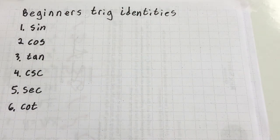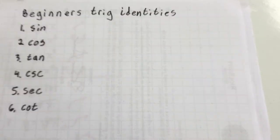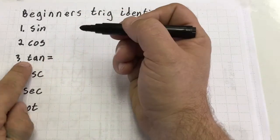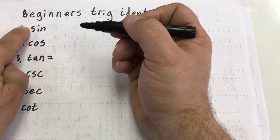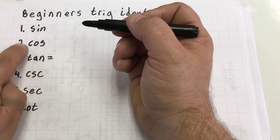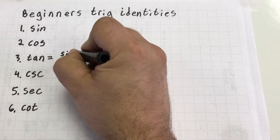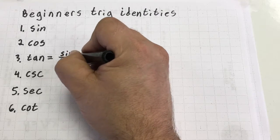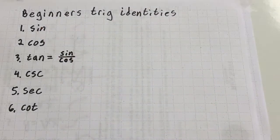I just want to do some memory mnemonics here. In order to understand what tangent is, tangent is equal to sine over cosine. So that's my first real trig identity — I represented tangent as a combination of two other trig functions.